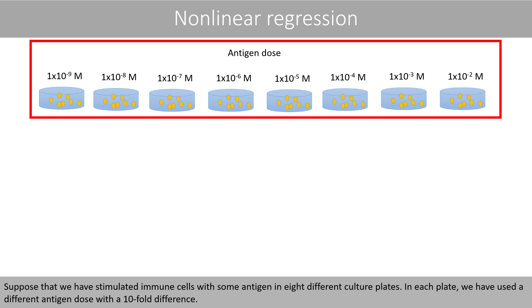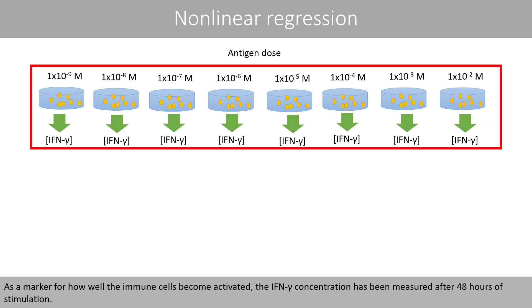Suppose that we have stimulated immune cells with some antigen in eight different culture plates. In each plate, we have used a different antigen dose with a ten-fold difference. As a marker for how well the immune cells become activated, the interferon gamma concentration has been measured after 48 hours of stimulation.